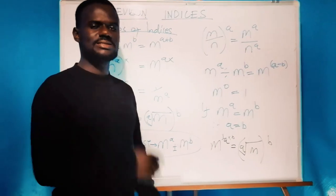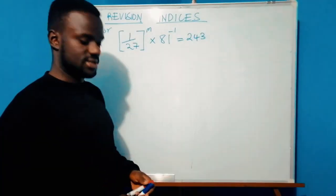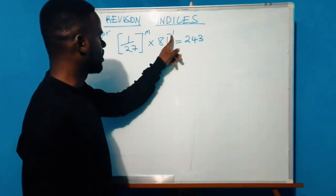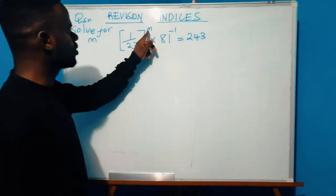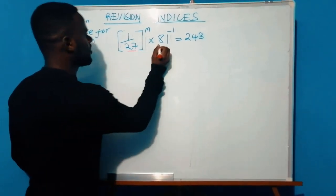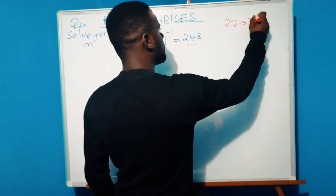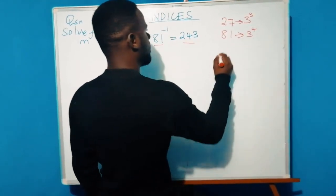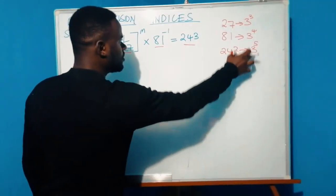Let's go through an example question step by step. We have: one over 27 raised to power m, times 81 raised to power negative one, equals 243. We need to solve for m. The first step is to write each number in its lowest index form. Remember, 27 is 3 raised to power 3, 81 is 3 raised to power 4, and 243 is 3 raised to power 5.